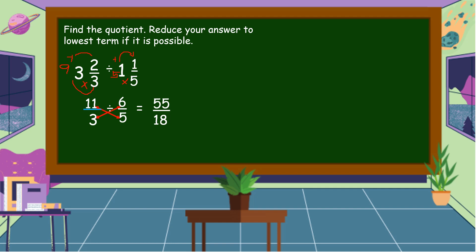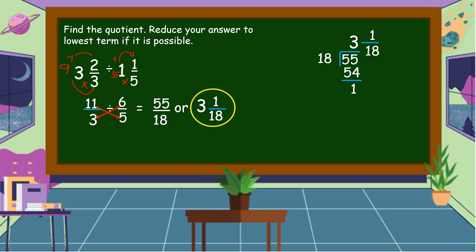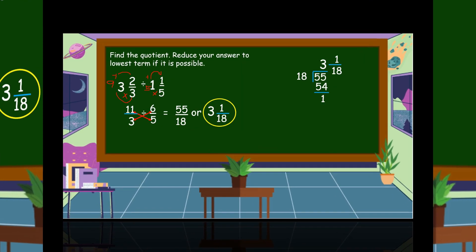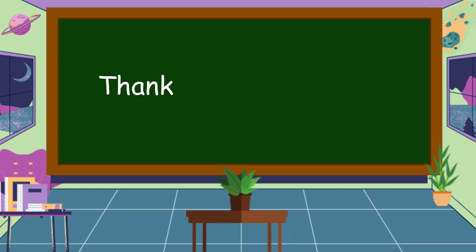Since fifty-five over eighteen is an improper fraction, we're going to divide the numerator by the denominator. Fifty-five divided by eighteen is equal to three. Three times eighteen is equal to fifty-four. Fifty-five minus fifty-four is equal to one. Tapos, itong one na ating remainder ay gagawin natin numerator, tapos yung eighteen na divisor ay gagawin natin denominator. So, fifty-five over eighteen or three and one over eighteen. So, this is our final answer. I hope that you understand our lesson for today. Thank you for watching.